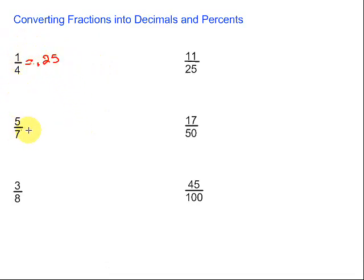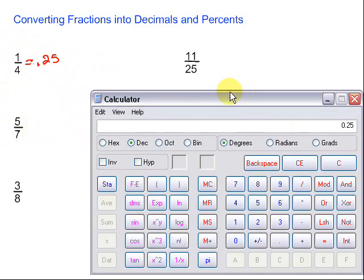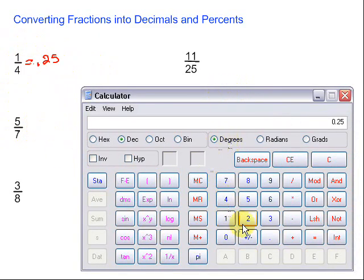Let's take a look at the next one. Five-sevenths. Same deal. Divide the top number by the bottom number to get our decimal. Five divided by seven equals... okay, big mess.